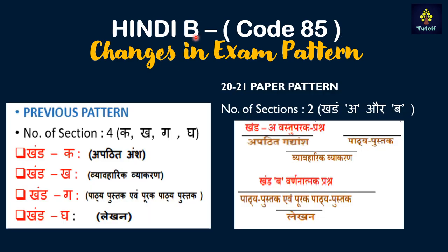For Hindi B, the code is 085. Earlier there were four sections: Khand Ka, Kha, Ga, and Gha. Khand Ka covers Apadhit Ansh (unseen passage). Khand Kha covers grammar. Khand Ga includes objective-type questions such as unseen prose, textbook, and practical grammar. Khand Gha contains descriptive questions covering the textbook, supplementary reader, and writing.